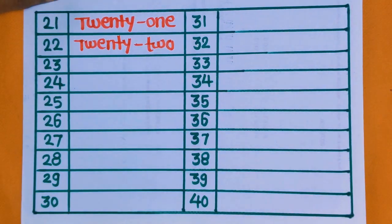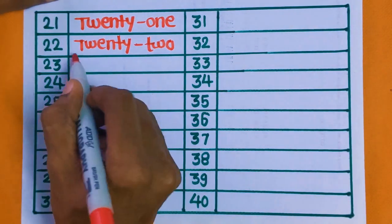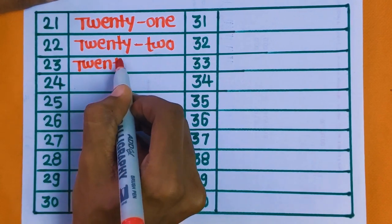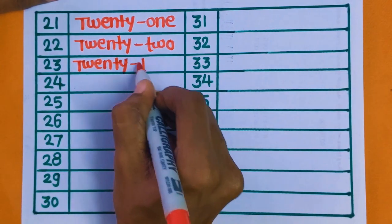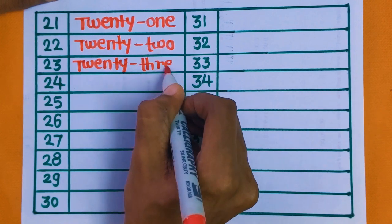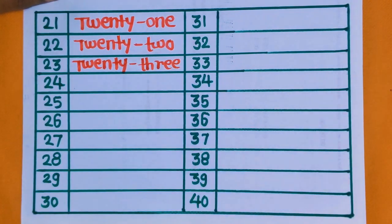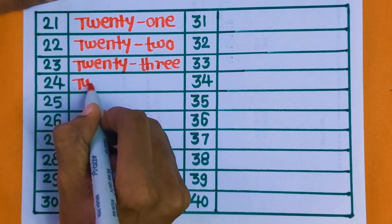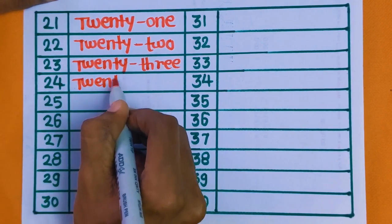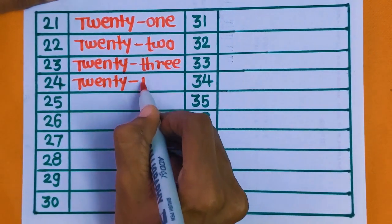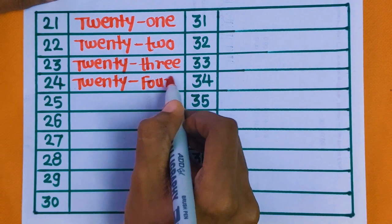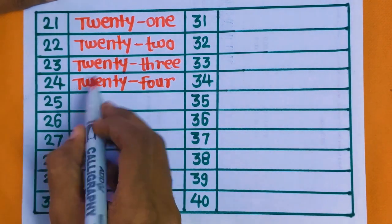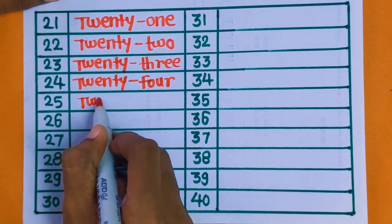Next is 23 — TWENTY THREE. Next is 24 — TWENTY FOUR. Next number is 25 — TWENTY